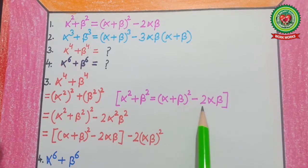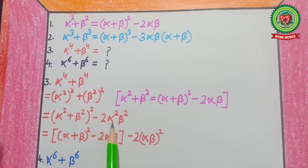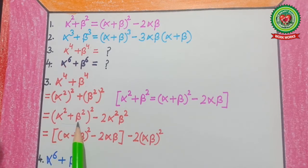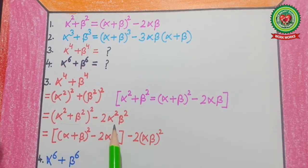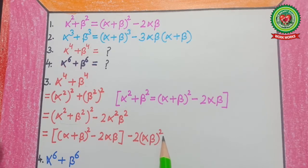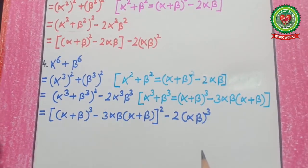So α⁴+β⁴ = (α²+β²)² − 2α²β². Now apply the same formula again: α²+β² = (α+β)²−2αβ, so the full expression becomes [(α+β)²−2αβ]² − 2(αβ)². This is the formula for α⁴+β⁴.